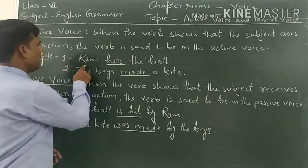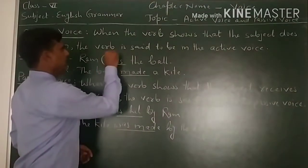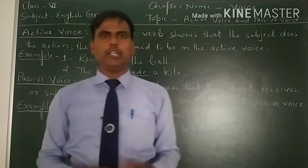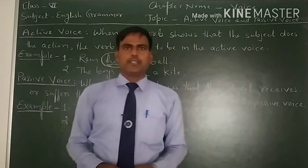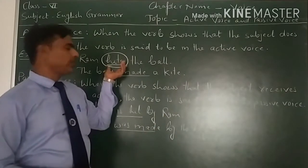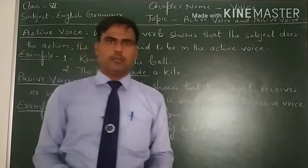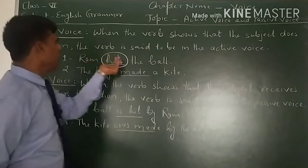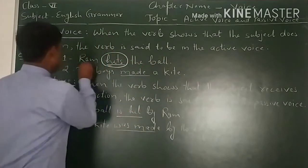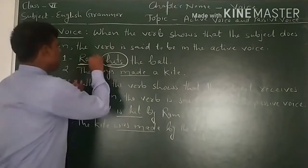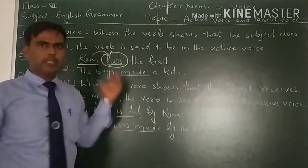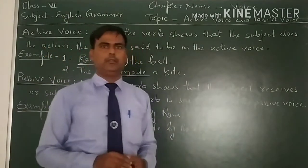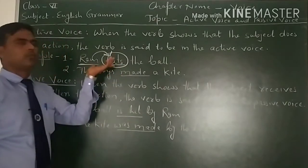For example, Ram hits the ball. Here, 'hit' is the verb — simple present tense. I have just taught you tenses and told you how you can recognize a tense. The sentence is Ram hits the ball. The subject is Ram, and this subject does the action. That's why it is in active voice.